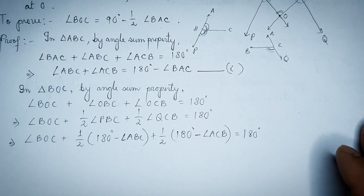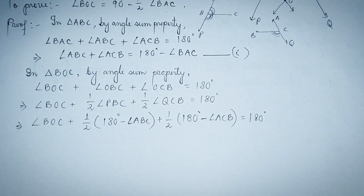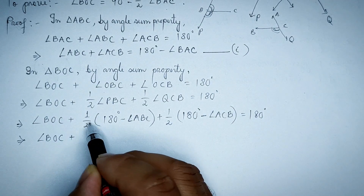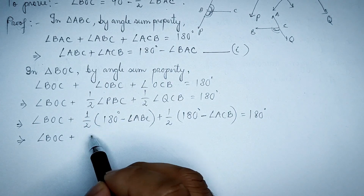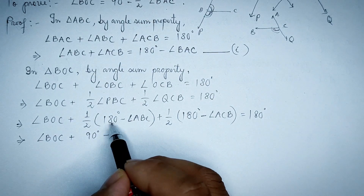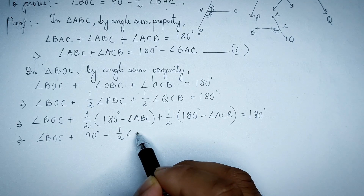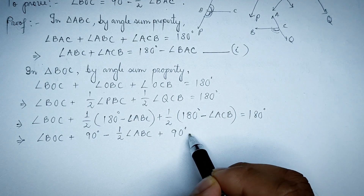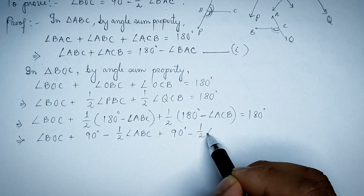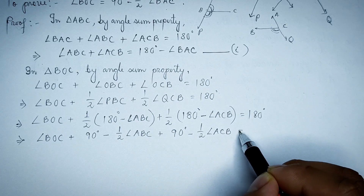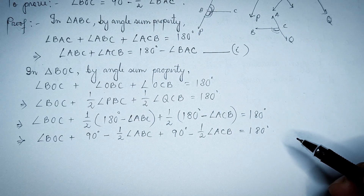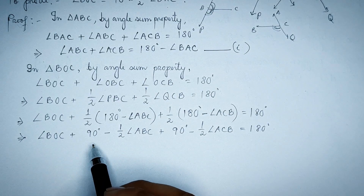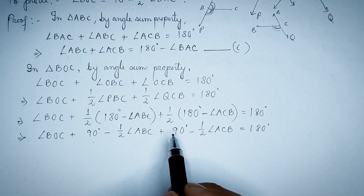So here we go. Multiply to x. Angle BOC plus half multiply to x, half multiply to x. 90 degrees minus half multiply to x minus half angle ABC, plus half multiply to x, 180 degrees. 90 degrees minus half angle ACB equal to 180 degrees. Here we go — implies angle BOC plus 90 degrees minus half.